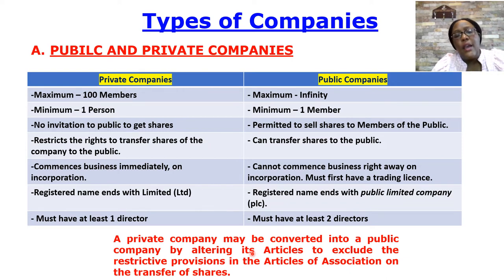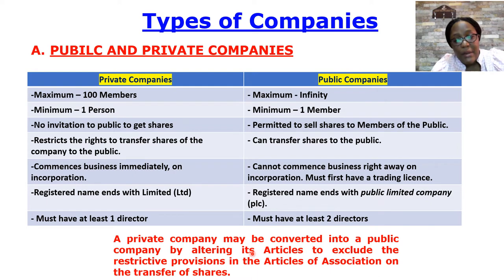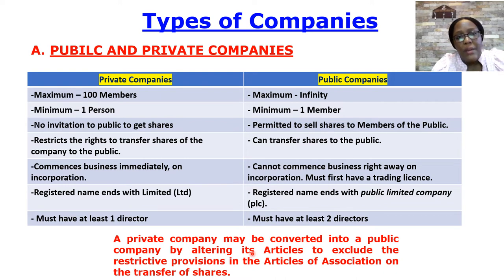All companies in existence are either private companies or public companies. When setting up your business, you must decide: do you want your business to be a public company — selling shares to the public — or do you want it to be a private company, just you and the persons you've chosen as shareholders, or as a single-member company? If you want your private company converted to a public company, you must first change the articles — the document that established your private company.